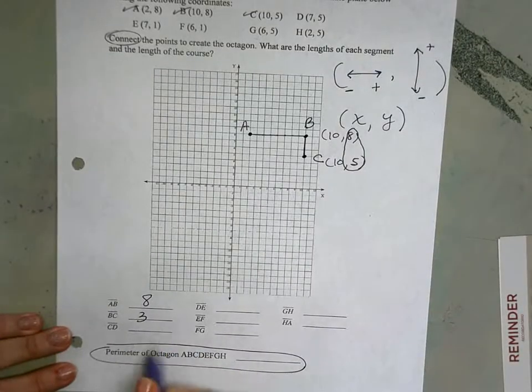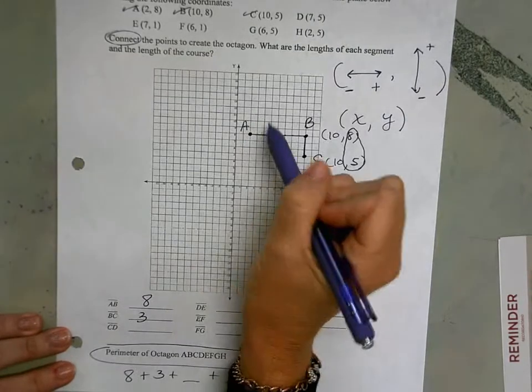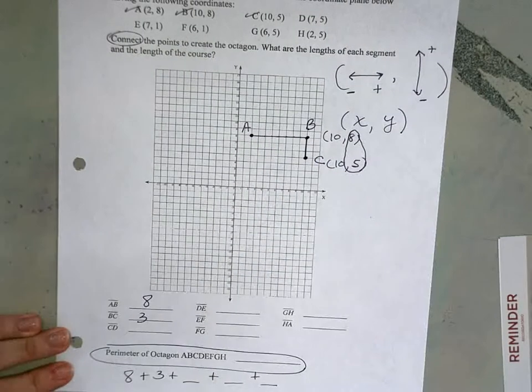Which means you're going to add up all these values. 8 plus 3 plus the other values that you get. And that's going to give you the perimeter or the outside edge of this octagon.